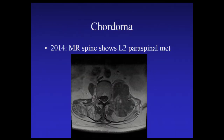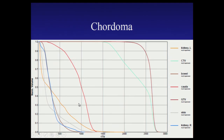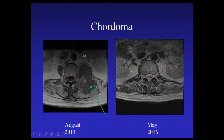Here's an example of a patient we treated in 2014 — a chordoma metastasis to the paraspinal space next to the spine at L2, a very large lesion. We treated it with stereotactic radiation, delivering 24 gray in one fraction, carving the radiation dose around the spinal canal, avoiding the kidney, and limiting dose to the bowel. The dose-volume histogram shows the tumor target in red receiving an excellent dose, while normal structures show clear dose separation. The original scan from August 2014 is shown, and nearly two years later there is hardly any evidence of disease — it almost looks as though it was surgically removed, but it was treated with a single dose of radiation.